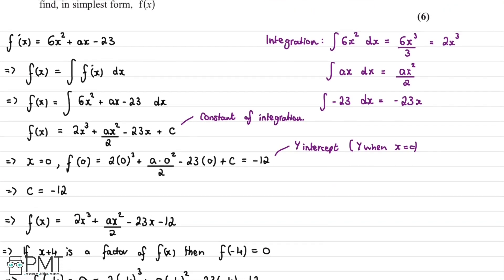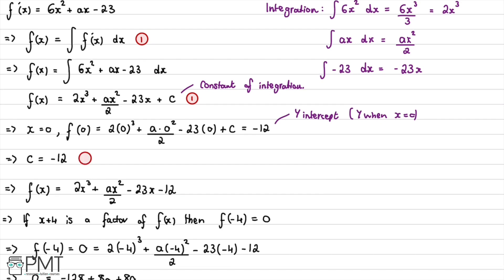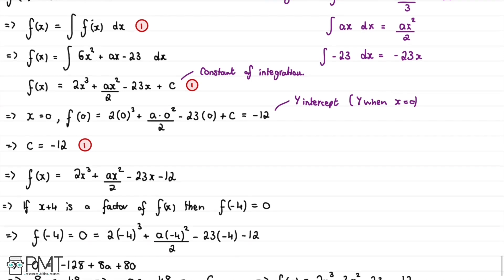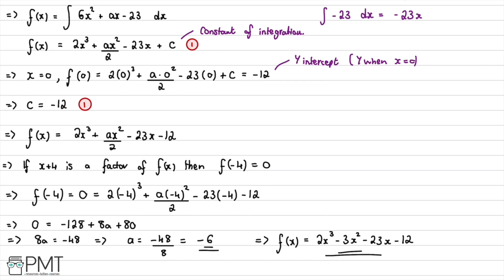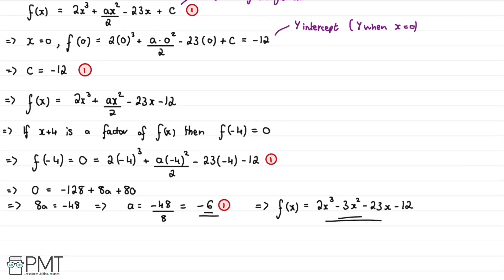Looking back — this was worth six marks. The first mark is for knowing to integrate. The second mark is for correctly integrating all terms and adding the constant of integration. The third mark is for using the y-intercept to find C = -12. The fourth mark is for recognising that (x + 4) being a factor means f(-4) = 0 and substituting that in. The fifth mark is for correctly finding a = -6. The sixth and final mark is for stating f(x) in its simplest form.